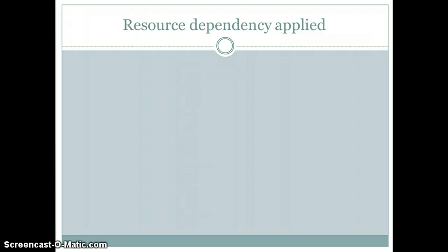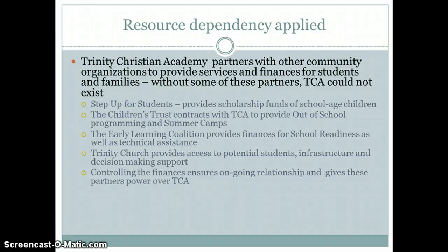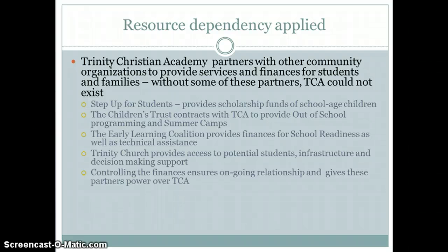To apply resource dependency to my school: Trinity Christian Academy partners with other community organizations to provide services and finances for students and families. Without some of these partners, Trinity Christian Academy could not exist. For example, Step Up for Students provides scholarship funds for school-age children. The Children's Trust contracts with Trinity Christian Academy to provide out-of-school programming and summer camps. The Early Learning Coalition provides finances for school readiness as well as technical assistance. Trinity Church provides access to potential students, infrastructure, and decision-making support. Controlling the finances ensures an ongoing relationship with each of these entities, but it also means those partners have power over Trinity Christian Academy — we are dependent on resources outside of our control.